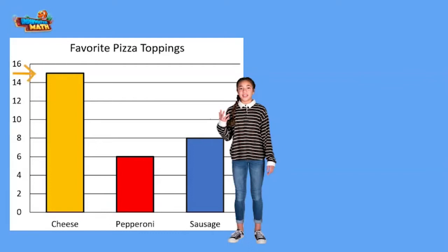The orange bar for cheese lines up between the 14 and 16 — this bar is worth 15. The pepperoni bar lines up with the 6, and the sausage bar lines up with the 8.